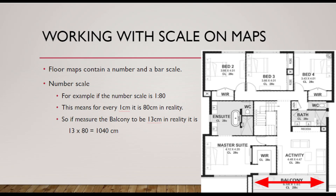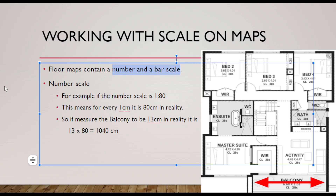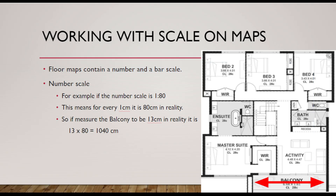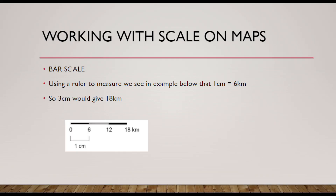Floor plans contain a number scale and a bar scale. The number scale is always expressed as a ratio. For example, a ratio of 1:80 means that for every one centimeter you measure on the drawing, it is actually 80 centimeters in reality. So if the balcony we see here measures 13 centimeters, we multiply 13 by 80, which gives us 1040 centimeters — meaning that balcony is around about 10 meters in reality.